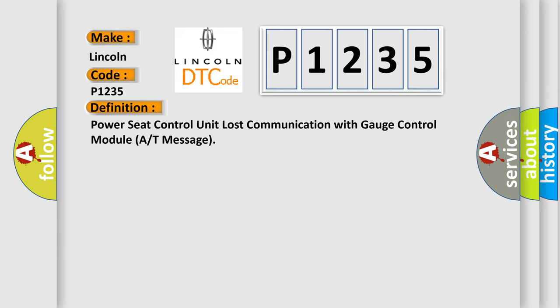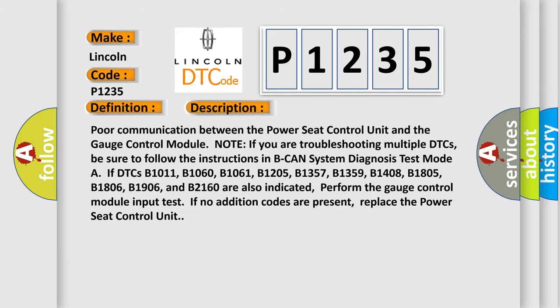This is a short description of this DTC code: poor communication between the power seat control unit and the gauge control module. Note: if you are troubleshooting multiple DTCs, be sure to follow the instructions in BCAN system diagnosis test mode. If DTCs B1011, B1060, B1061, B1205, B1357, B1359, B1408, B1805, B1806, B1906, and B2160 are also indicated, perform the gauge control module input test. If no additional codes are present, replace the power seat control unit.